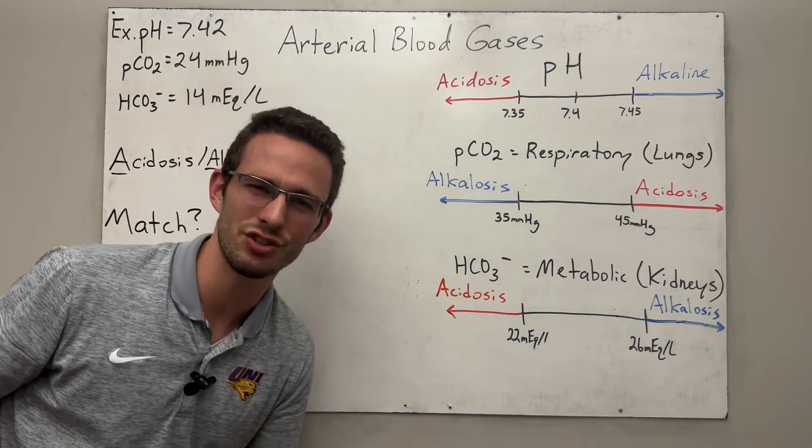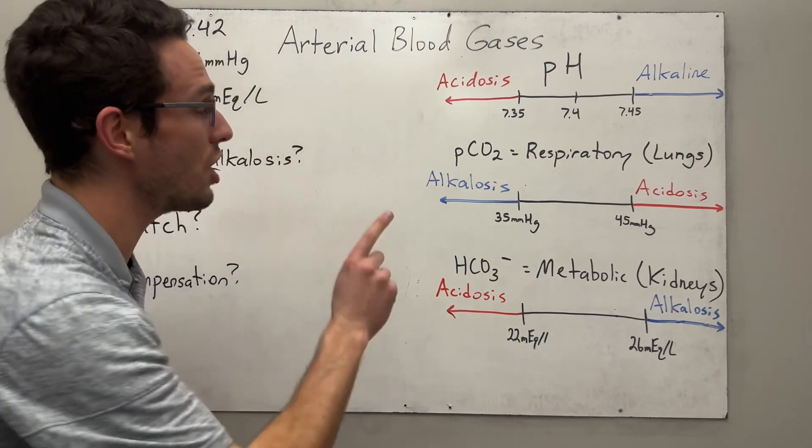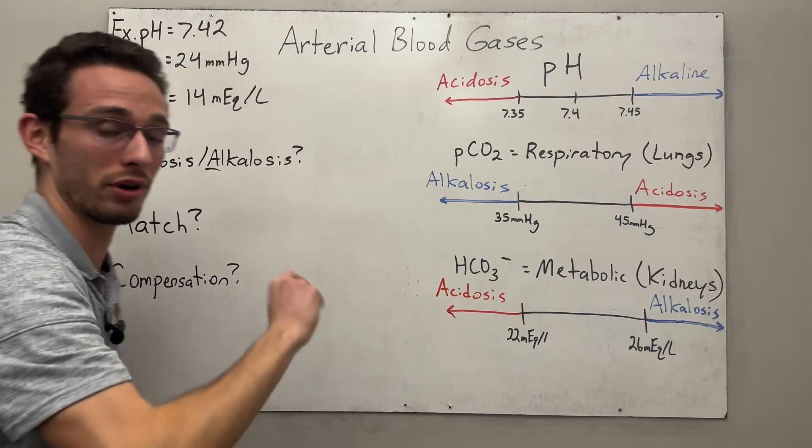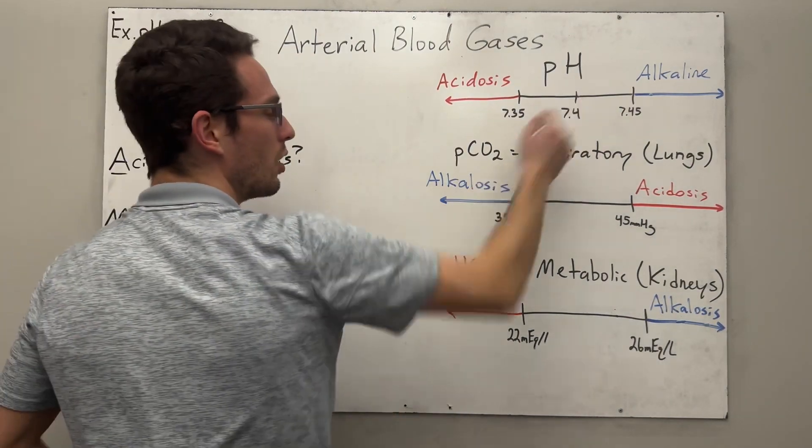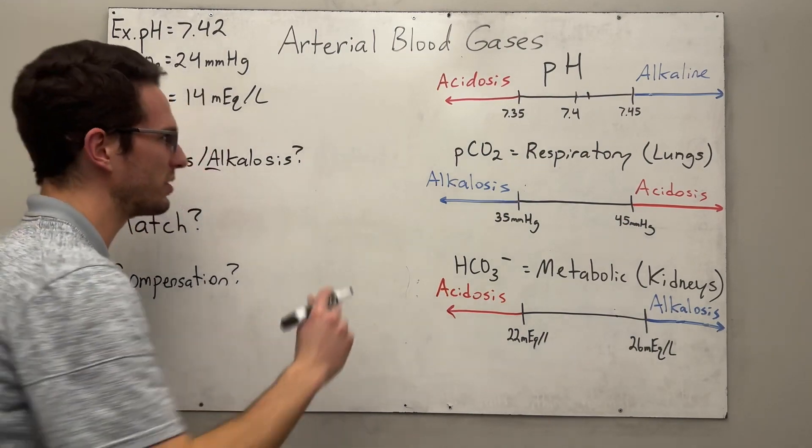You're probably confused because you're like, hey, that's normal. That's normal, right? But remember, I told you in the previous video to note if it's not perfectly 7.4. So since it's 7.42, we're going to consider that slightly alkalotic. So go ahead and jot down alkalosis just to be safe.